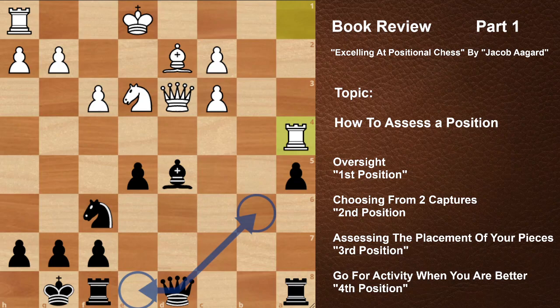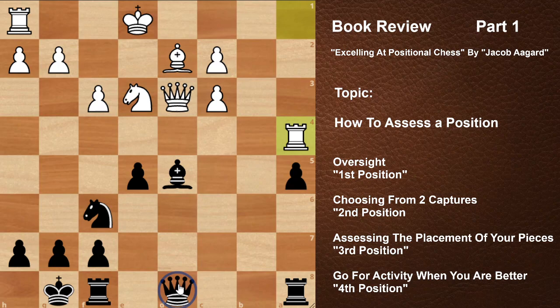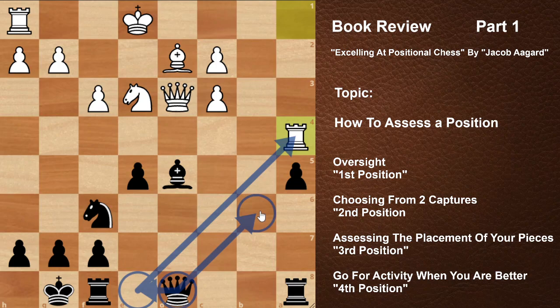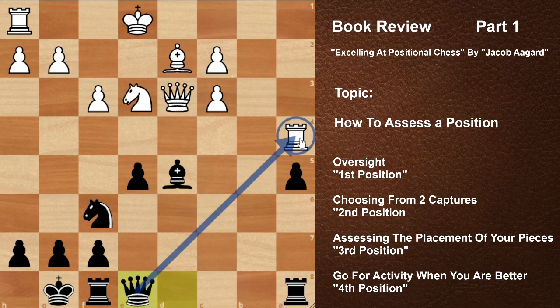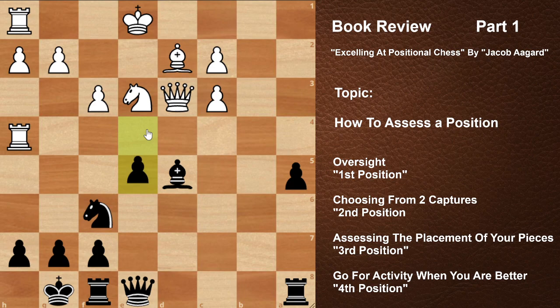Which move do you prefer — queen to b6 or queen to e8? This is the critical point of the game. Black has to understand his advantages and improve his queen. One move threatens the rook, the second move goes to b6 threatening a check. In the game the move queen b6 was played, but queen e8 was much better.